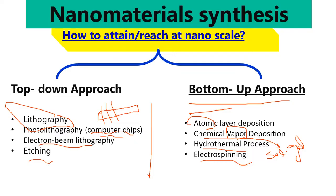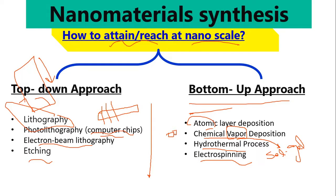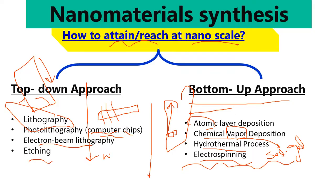So this was all about the synthesis of nanomaterials and how we obtain nanostructured materials. There are two big approaches: top-down and bottom-up. Top-down is like taking a big building and making small bricks, while bottom-up is like taking small bricks to build up a nanostructure. The top-down approach tends to be more costly and wastes more material, whereas the bottom-up approach is cheaper with less material waste.